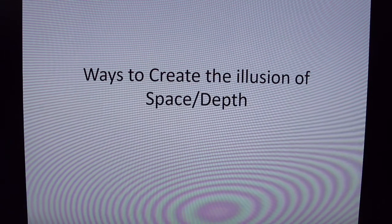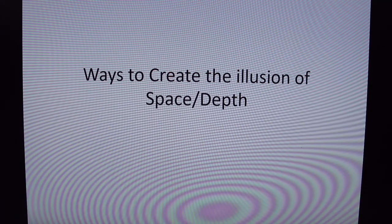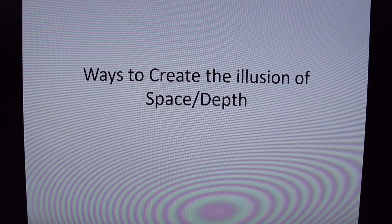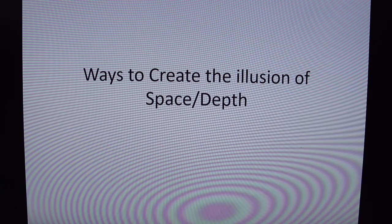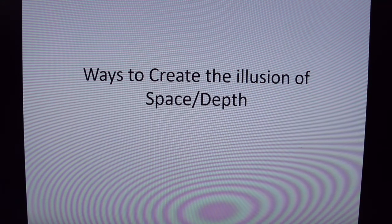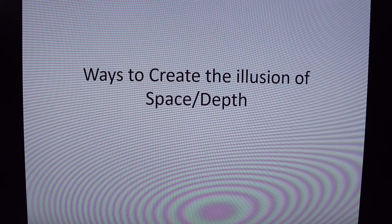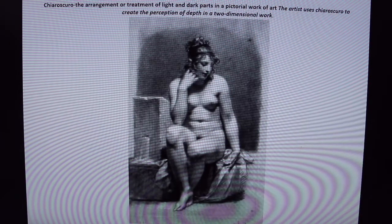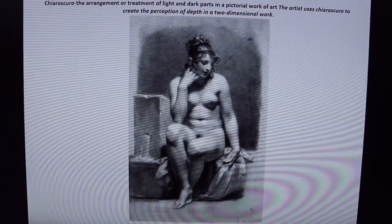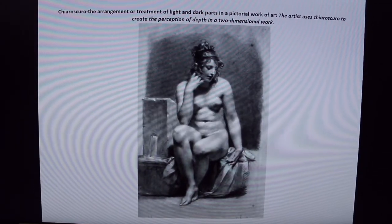Ways to create the illusion of space in two dimensions are a major concern of 2D artists. How are you going to make the viewer feel that this piece of art you're creating is three-dimensional, when it's actually flat? We spoke in the previous lecture — lecture number two; this is lecture number three — about 2D versus 3D. So let's talk about different ways to create that. One of the ways you can do that is through value, using lightness and darkness.